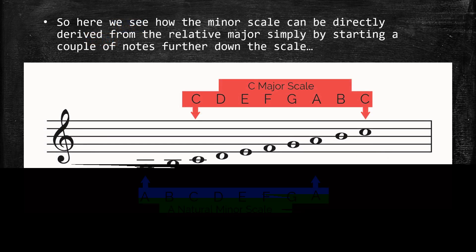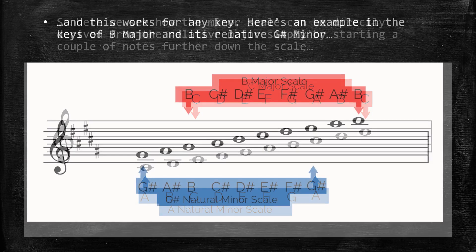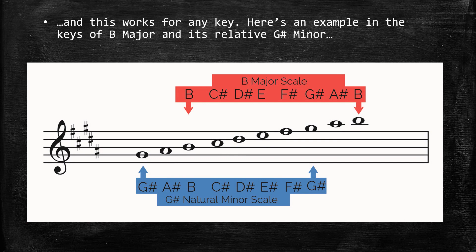The relative minor scale starts on the sixth degree of its relative major scale. So here we see how the minor scale can be directly derived from the relative major, simply by starting a couple of notes further down the scale — eight, seven, six. This works for any key. Here's an example in the keys of B major and its relative G sharp minor.